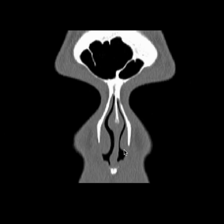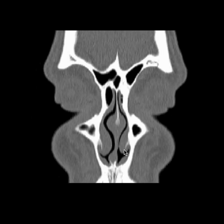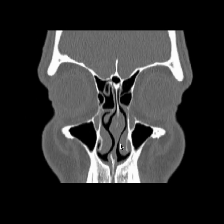Going posteriorly, now we start seeing the air cells. The orbit is seen. We can still see the septum and now we start seeing the inferior turbinate. Coming from anterior to posterior, the left side is slightly compromised. Now we start seeing also the agger nasi — that is the air cell. And then there are a lot of ethmoids that start appearing.